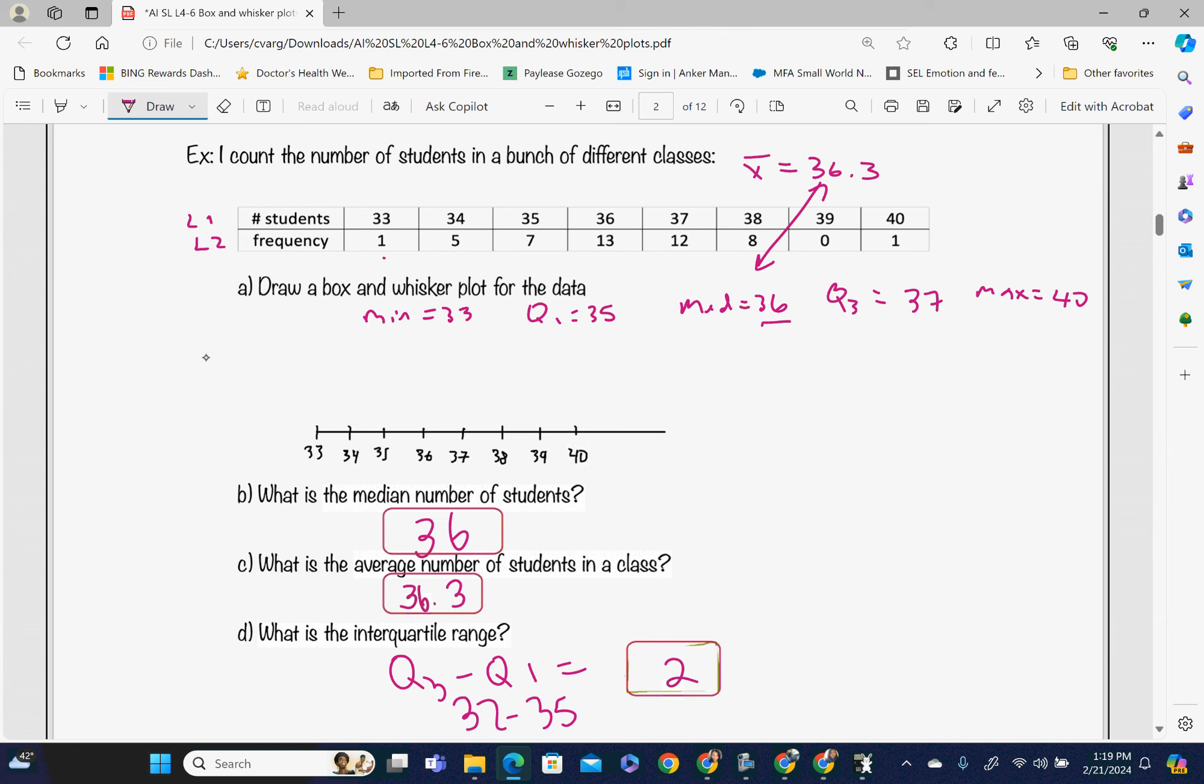All I have to do is draw the box and whisker plot. Our min is 33, and that's where we're putting our line, straight line. Our Q1 is 35, that is where our box starts. It goes to 37, where our box ends. I'm going to draw that part. Our median is 36, and our max is 40. Now I'm just going to connect this.